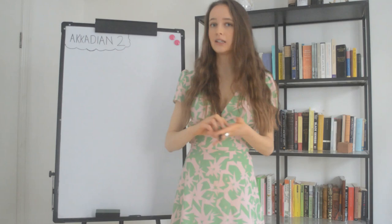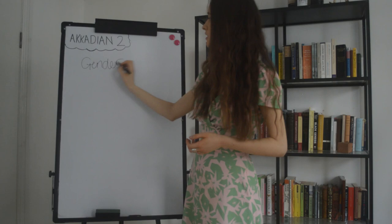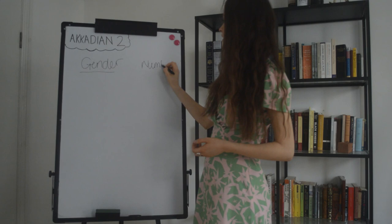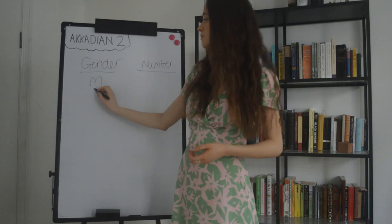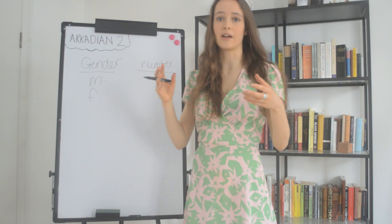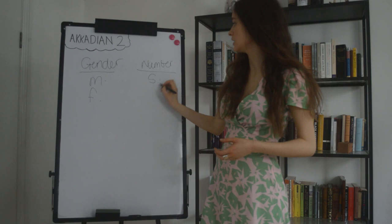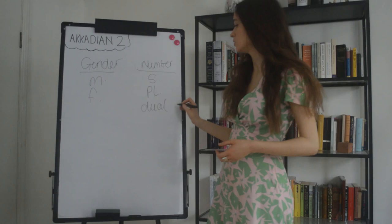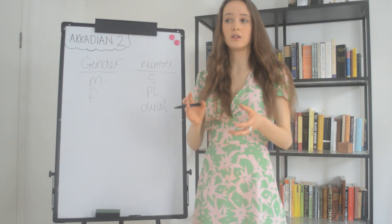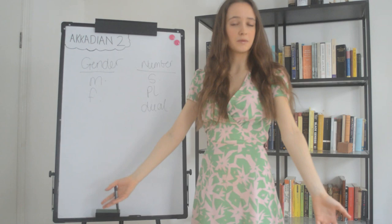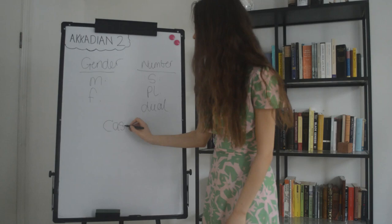In the formation of nouns, there are three things to consider: gender, number, and case. As with many European languages, Akkadian has masculine and feminine gender in its nouns, and this affects the grammatical content of their form. In terms of number, we have singular and plural, as you would expect, and we also have the dual number. The dual number is used to refer to two things or a pair of objects — usually things which form natural pairs, like eyes, arms, legs, etc.